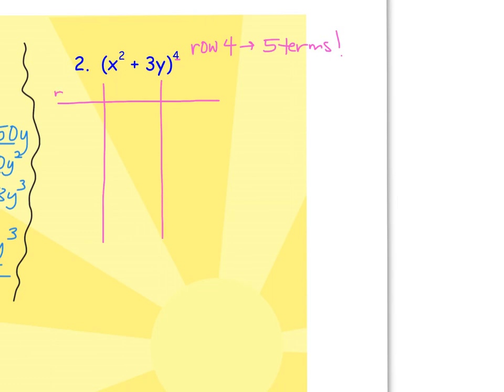Our NCR helps us define that first coefficient. Look at our a value this time. It already has an exponent. We're going to have to think through that as we raise it to different other powers. The b, it's plus 3y, so our b has a coefficient and a variable. Again, we have to be really mindful of those parentheses. To get our 5 terms, we're going to start with n equals 4. We'll do 4c0, 4c1, all the way down until we get to 4c4.